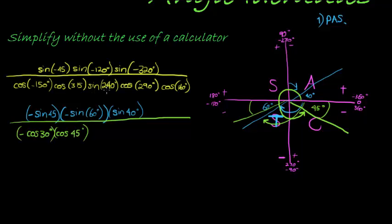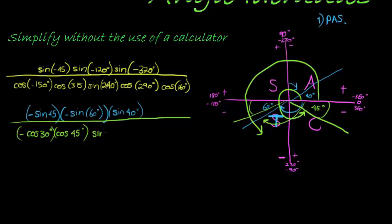Sine of 240 degrees — which quadrant is that? 240 is in the third quadrant: 180 plus another 60. So we have 60 more than 180, which means this becomes sine of 60 degrees, but in the third quadrant sine is negative.